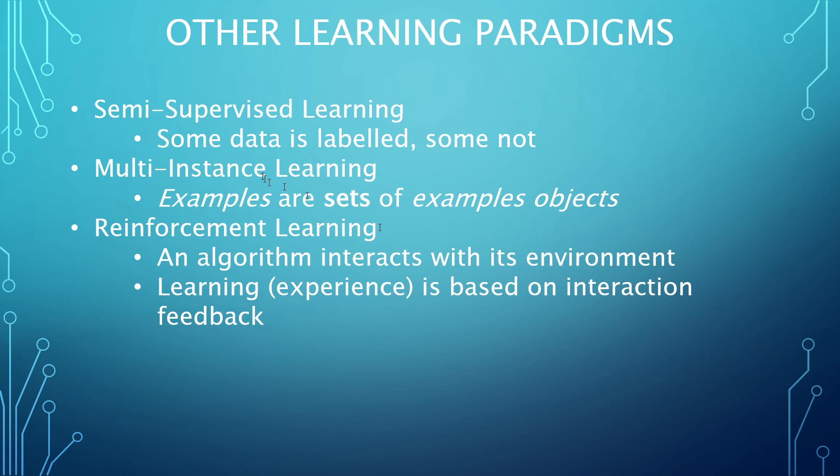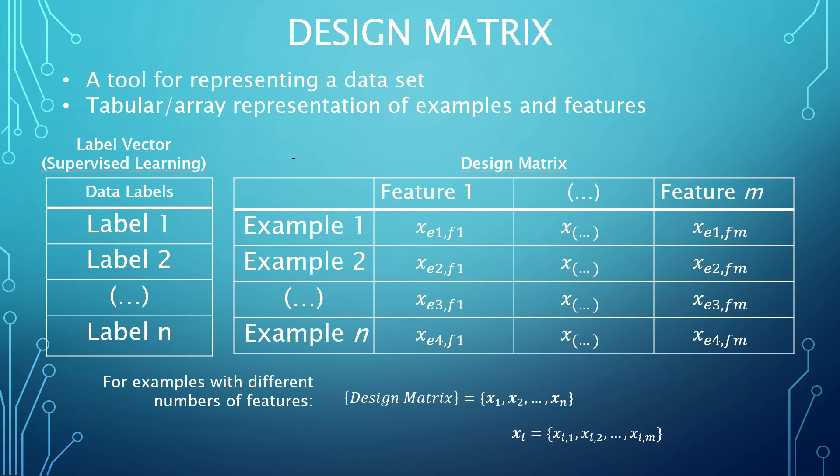Datasets are often described with a design matrix. This is simply a matrix containing all the information in the data set. Specifically, each row corresponds to one example, and each column to one feature. In this way, a single table encapsulates all the data. This only works for data items that can be described as vectors that are always of the same size. This isn't always the case though, such as when a translation learning system has text samples of different size, or a machine vision system has photographs of different sizes. In this case, set notation can be used.